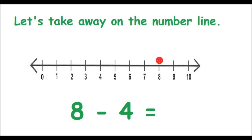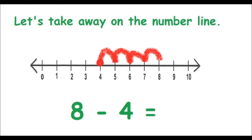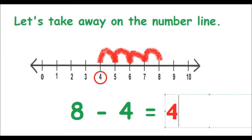So count with me. 1, 2, 3, 4 jumps backwards. Boys and girls, we have landed on our answer: 4. So 8 take away 4 is equal to 4.